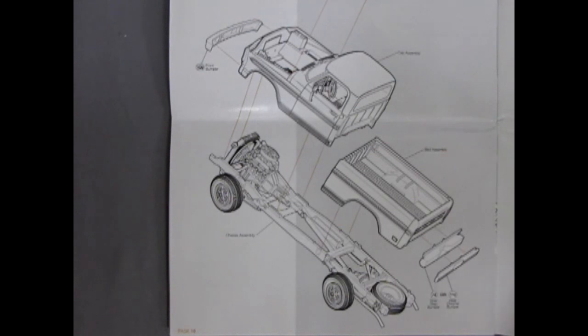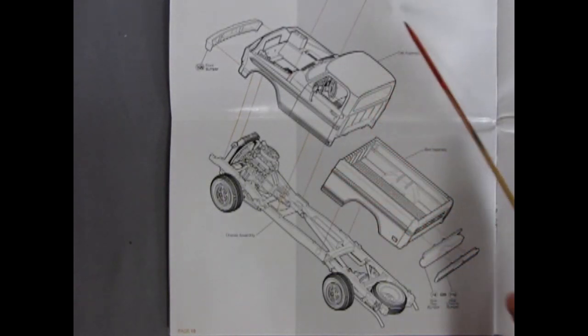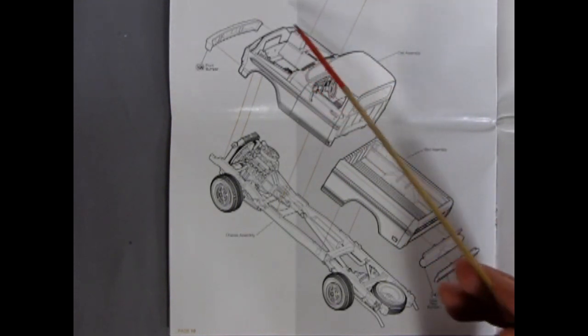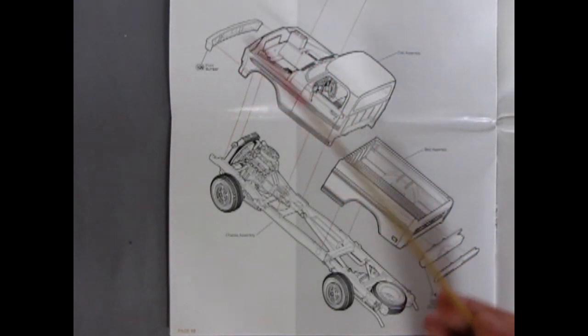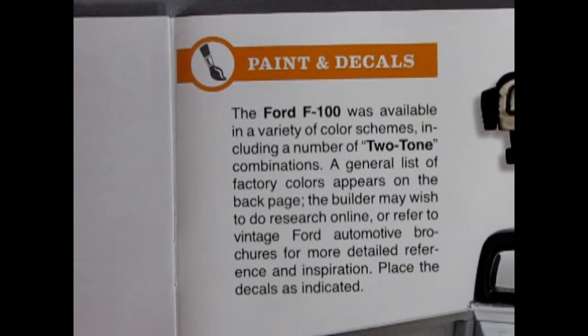Finally, all our completed components attach to the chassis. So here we have a choice of a rear chrome bumper or a rear step bumper. Our bed drops on, our cab drops in place, our hood goes onto the top of our cab and then we get our front bumper.